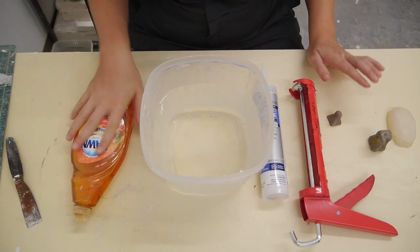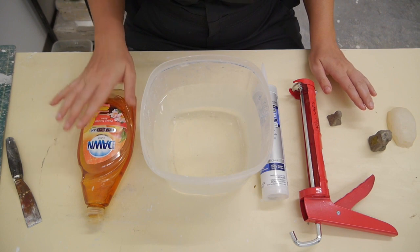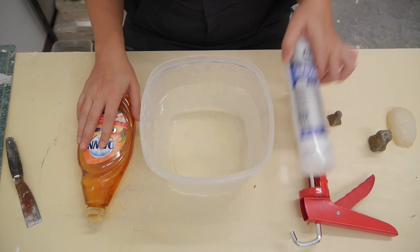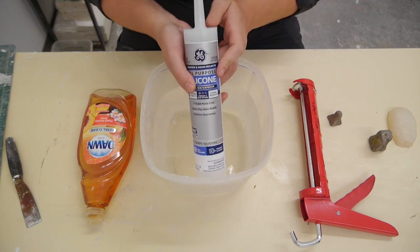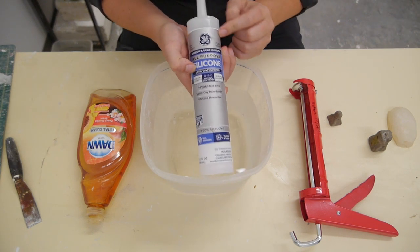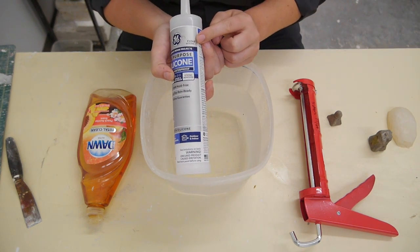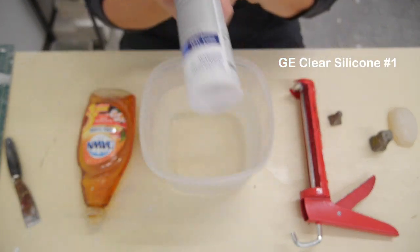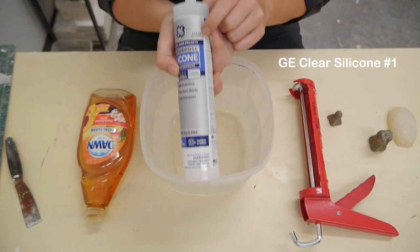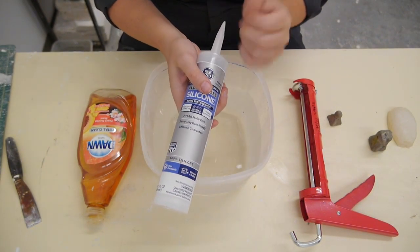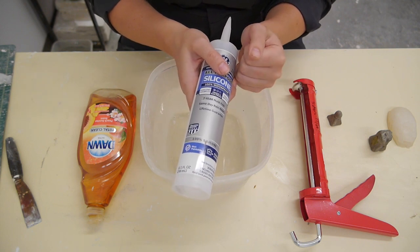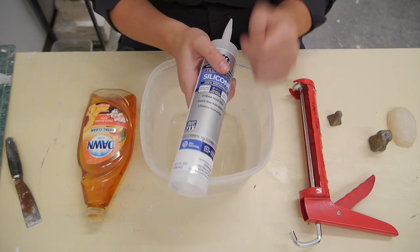I also have soap. Dawn is the best. I highly recommend Dawn. And then our silicone. Our silicone is GE, clear silicone number one. If you do this in the future, you want to get number one. Most often the cheapest silicone from the store is the best, ironically, for this. If you get a different kind of silicone, it might not cure.